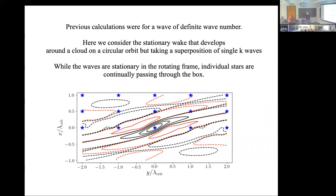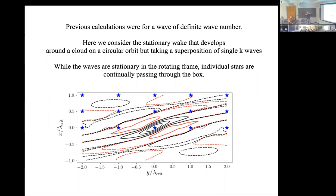As Julian and Toomre did, one can consider what happens when you put a single perturber into the disc co-rotating with the shearing box, giving a stationary wake. Particles are moving through the wake, but the wake itself is stationary — similar to the way we think of spiral structure, where stars move through the waves and get bunched up and then move apart. Interestingly, looking at stars at different positions within the disc you can find phase spirals. These are stationary phase spirals. There is no clock in these phase spirals.